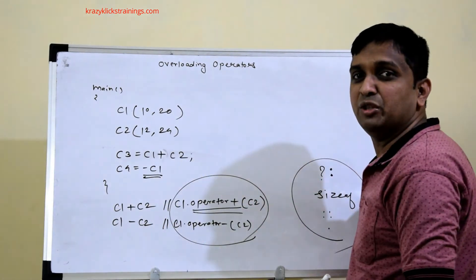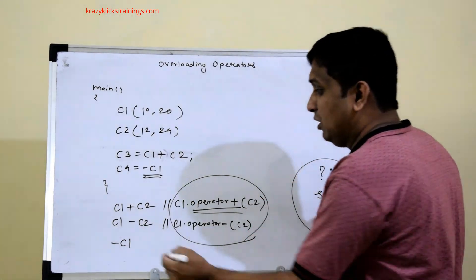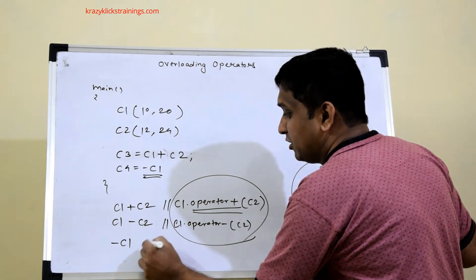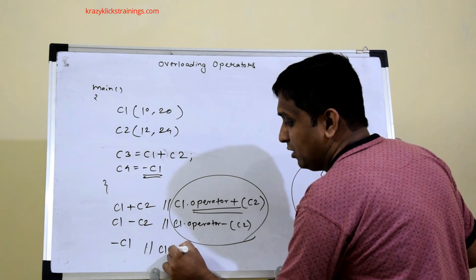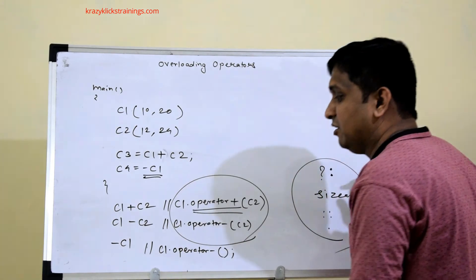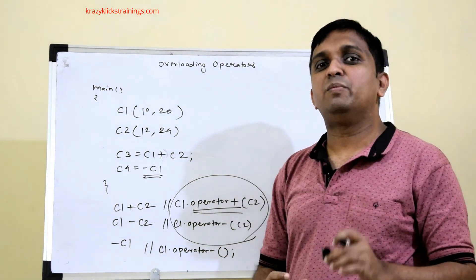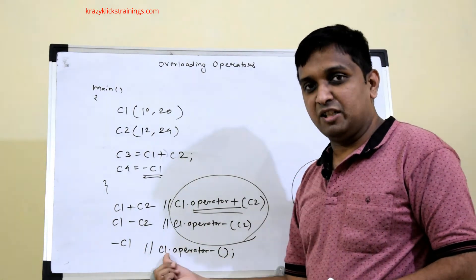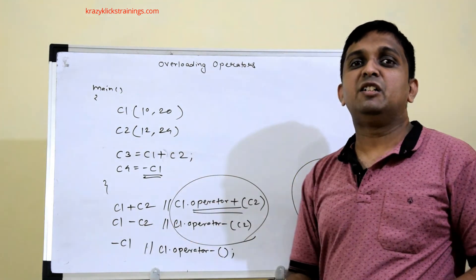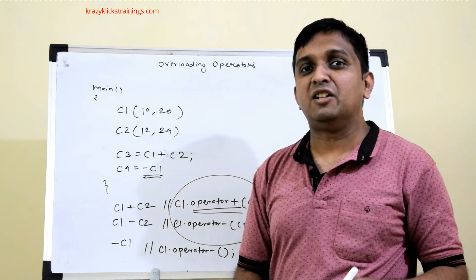Now let's consider a unary operator. If I write c4 = -c1, then minus is a unary operator and only one object is involved. That object is taken as the function-invoking object, so this statement is treated by the compiler as c1.operator-() with empty parentheses. For unary operators the single object is the invoking object; for binary operators, the left-hand side invokes and the right-hand side is explicitly passed.